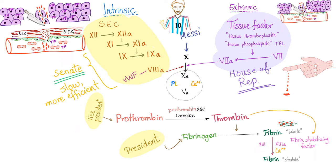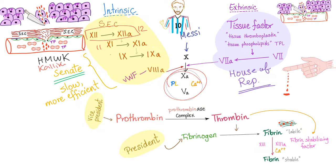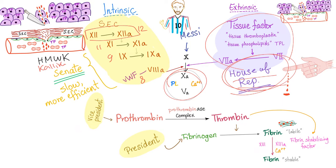How about the intrinsic pathway? It's longer. We need something intrinsic to the blood vessel — the subendothelial collagen, high molecular weight kininogen, or plasma kallikrein. All of these activate factor 12 into 12A. Factor 12A activates 11, which activates 9 and then 8. The extrinsic is fast; the intrinsic is slow but more efficient, like the House of Representatives versus the Senate.